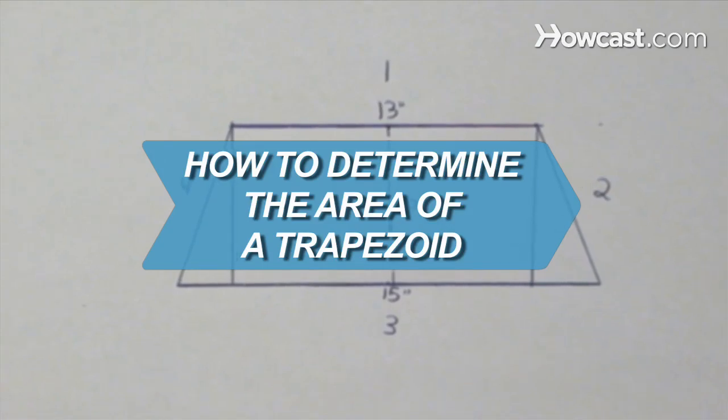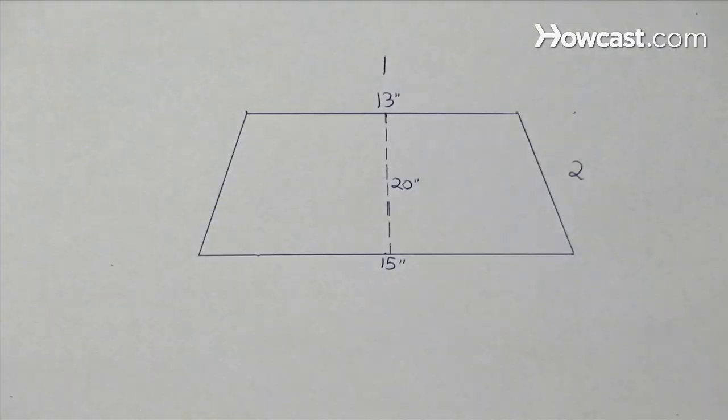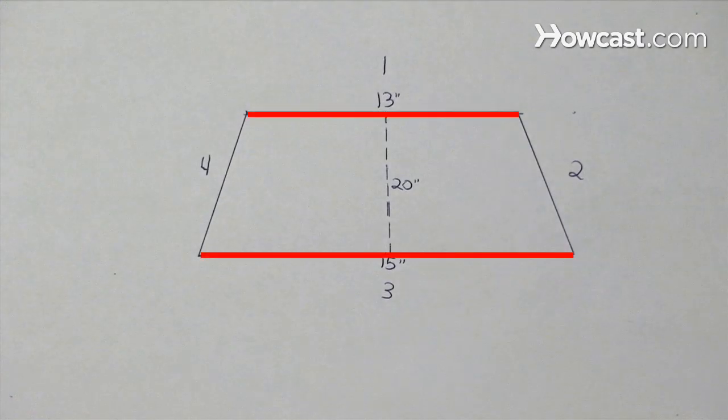How to Determine the Area of a Trapezoid. A trapezoid is a four-sided figure with one pair of parallel sides.